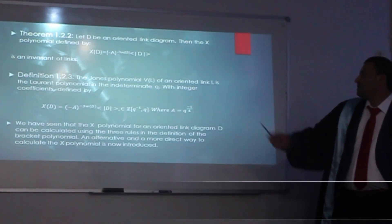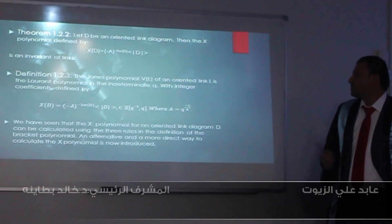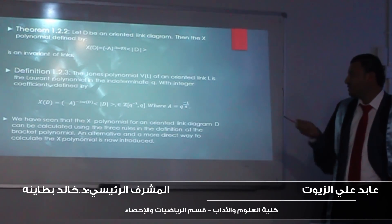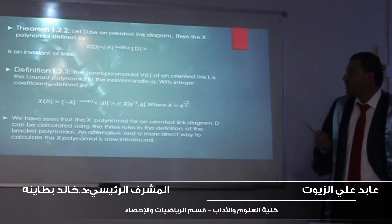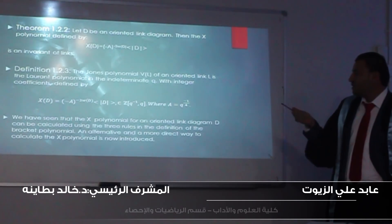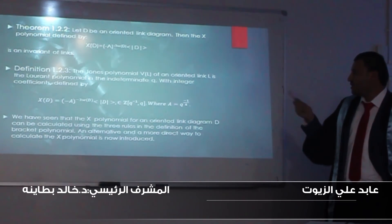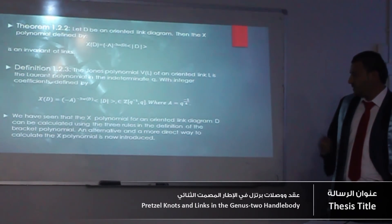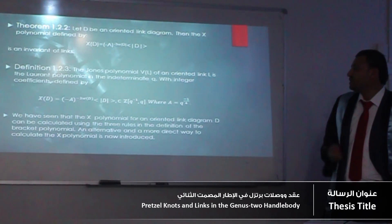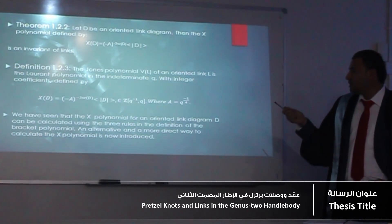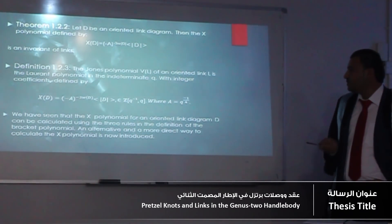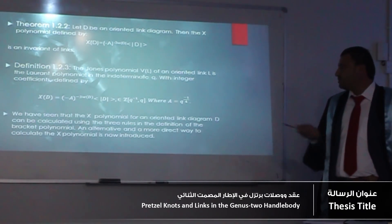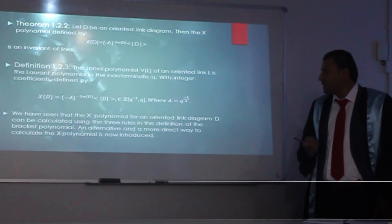We have seen that the X-polynomial for an oriented link diagram D can be calculated using the three rules in the definition, the previous definition of the bracket polynomial, and an alternative and more direct way to calculate the X-polynomial.